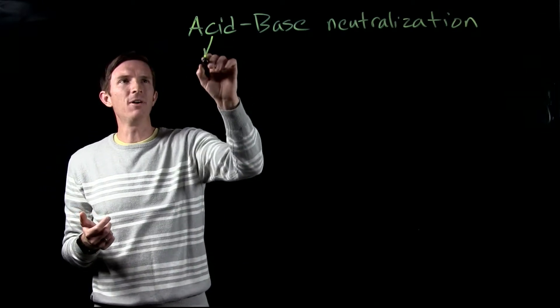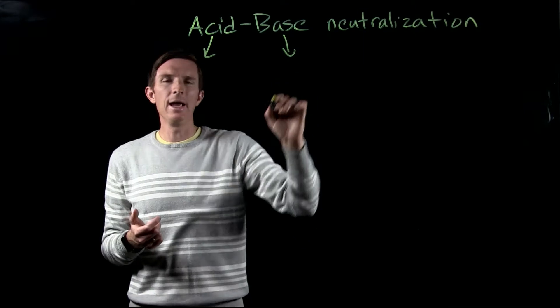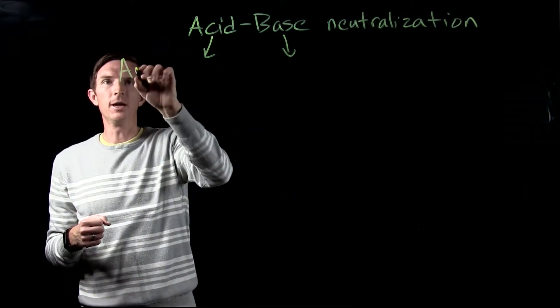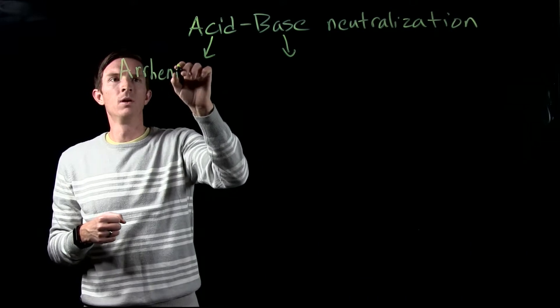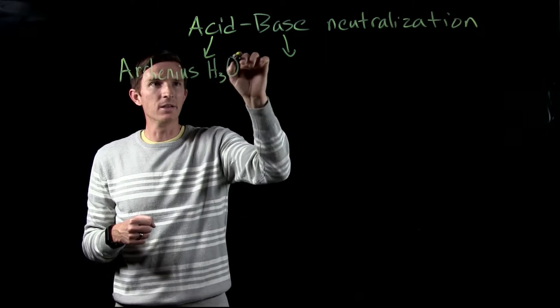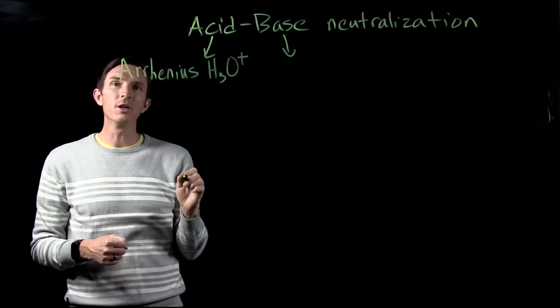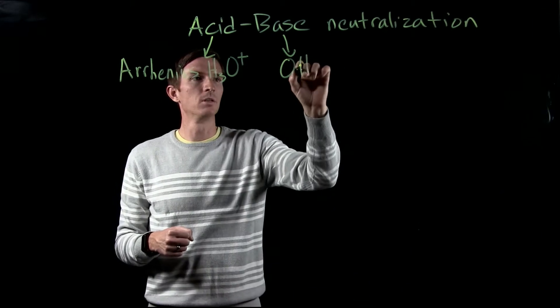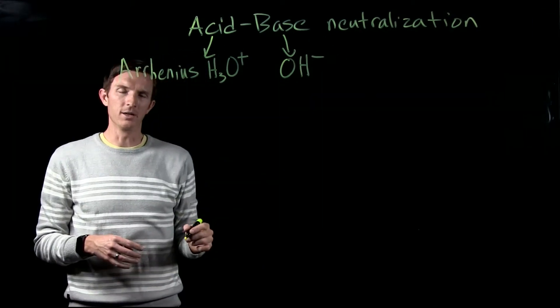So when we're looking at defining what an acid is and what a base is, we're going to use the Arrhenius definition. The Arrhenius definition says that an acid is something that produces the hydronium ion in water, whereas a base is something that produces the hydroxide ion in water.